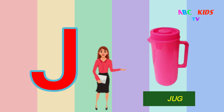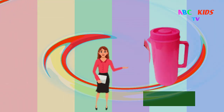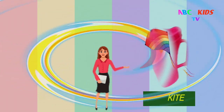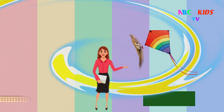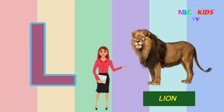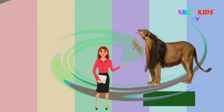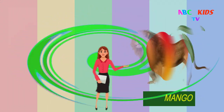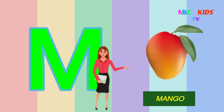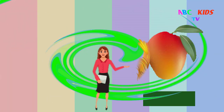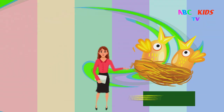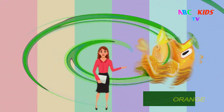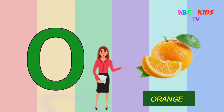I for ice cream, J for jug, K for kite, L for lion, M for mango, N for nest, O for orange.